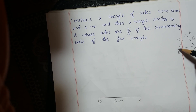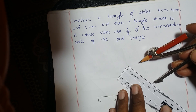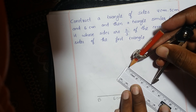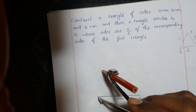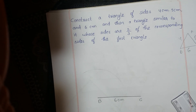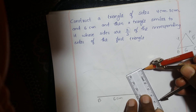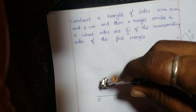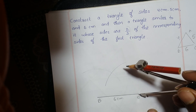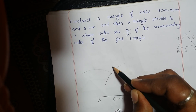AB is 4 cm, so with the help of a compass take a radius of 4 cm. Put the compass needle at B and draw an arc. AC is 5 cm, so with the help of a compass take a radius of 5 cm. Put the compass needle at C and draw one more arc cutting the first arc. The two arcs are intersecting — name this point A.